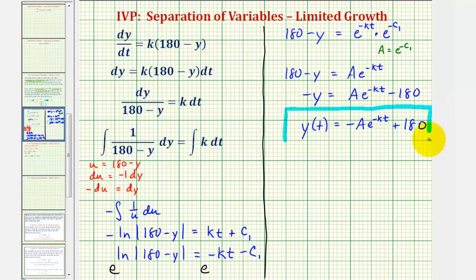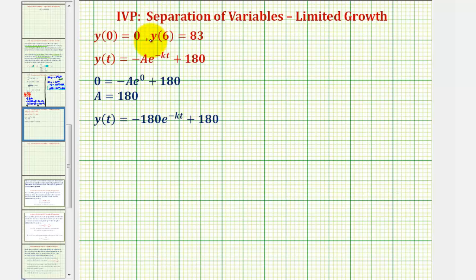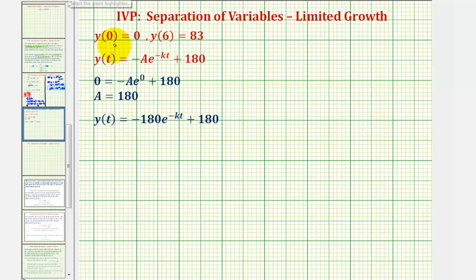Now we'll use the initial conditions to find the particular solution and make our estimate for sales after one year, or twelve months. Using the initial condition y of zero equals zero: when t is zero, e to the zero equals one, so we get zero equals negative a plus 180, which gives us a equals 180. Substituting a equals 180 into our equation gives us the updated equation, and now we still have to find k.